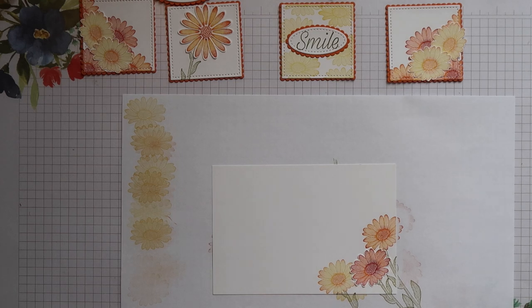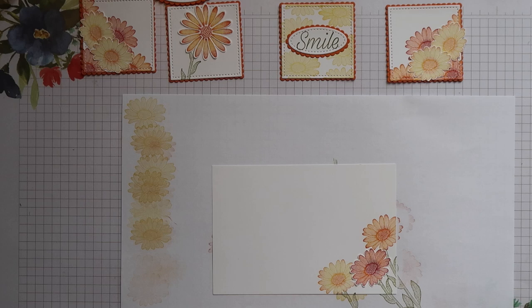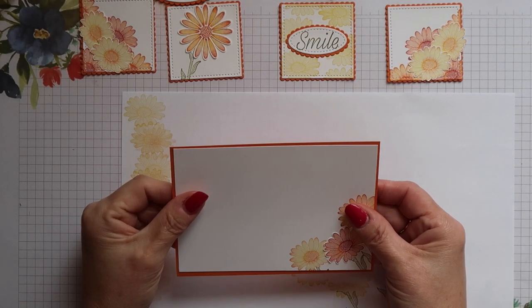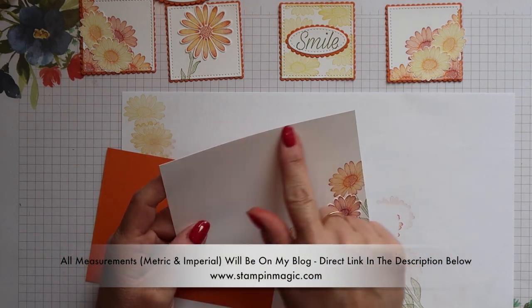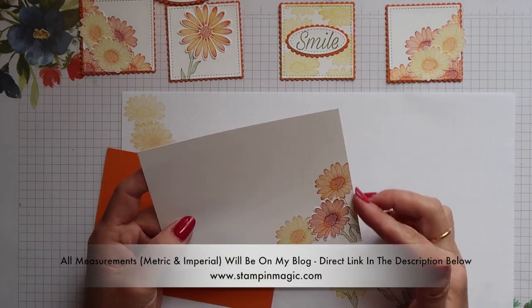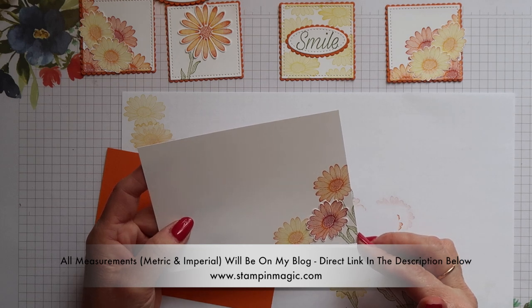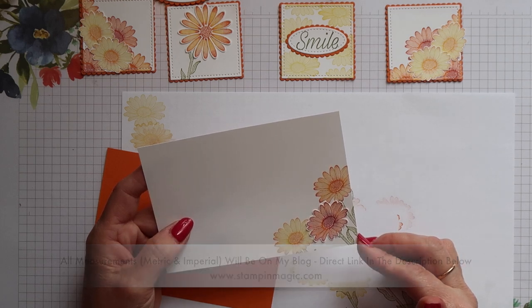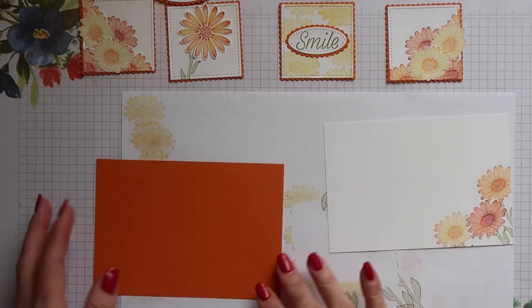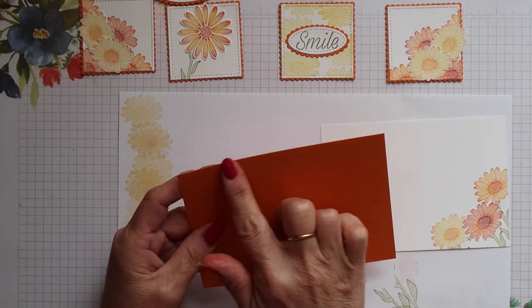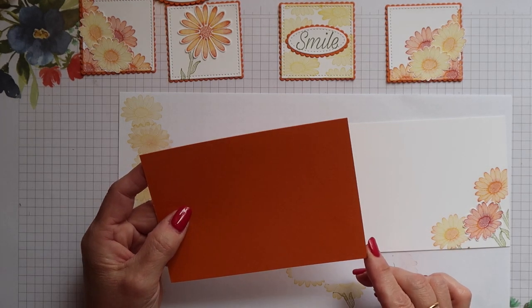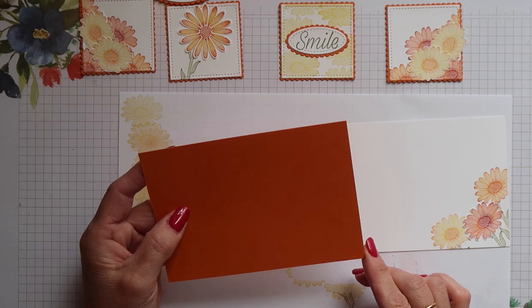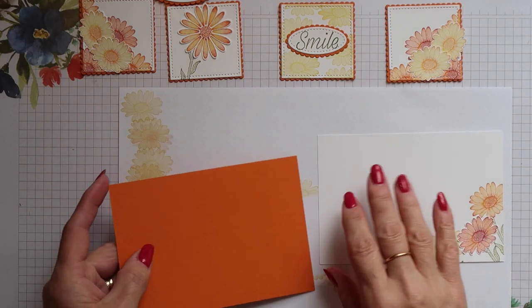I've gone ahead and stamped the back panel and I've added the Pumpkin Pie daisy that I cut out earlier. If you're in the UK this white panel should measure 14cm by 9.6cm. If you're in the US it should be 5 1/8 inch by 3 7/8 inch. The pumpkin pie layer for underneath is 14.4cm by 10cm or if you're in the US it's 5 1/4 inches by 4 inches.